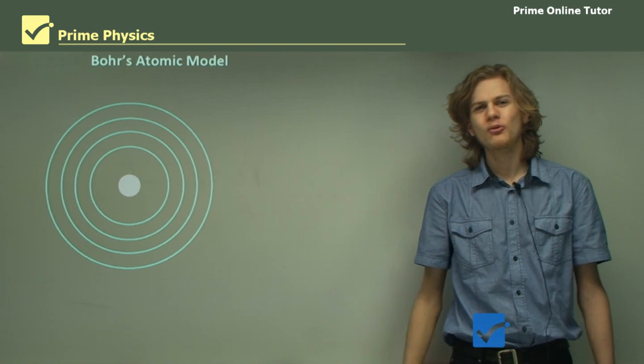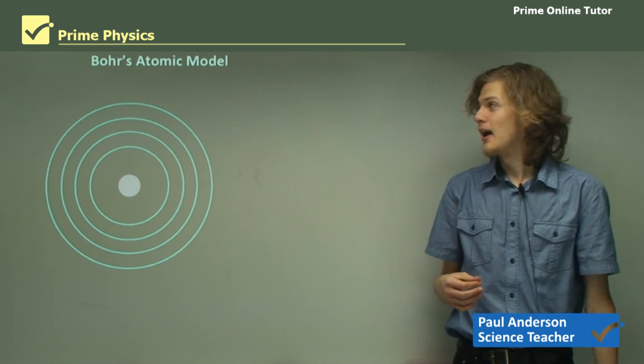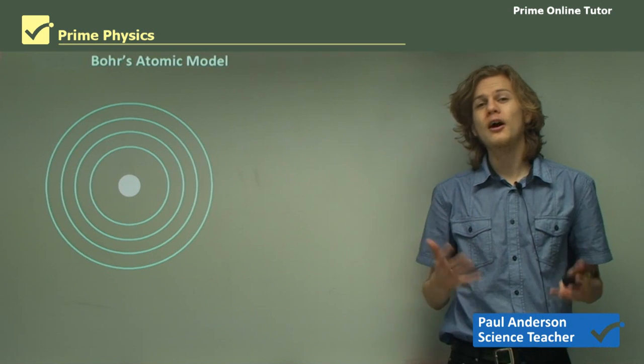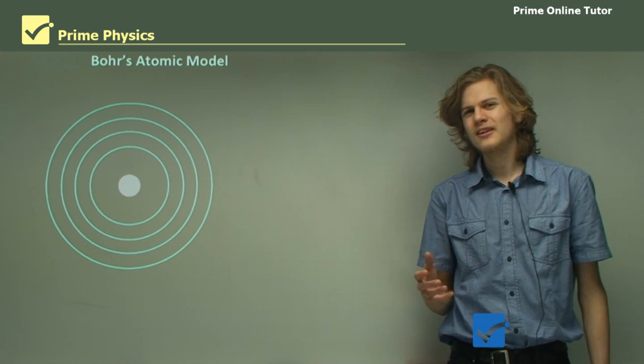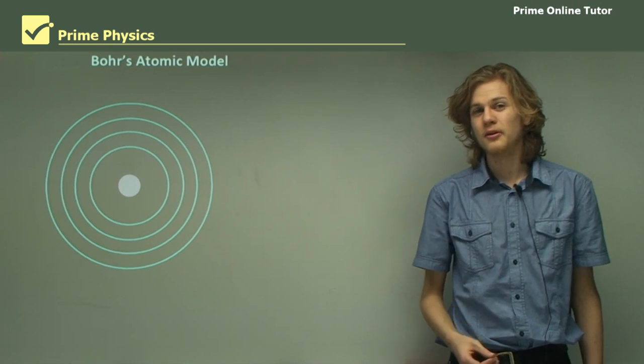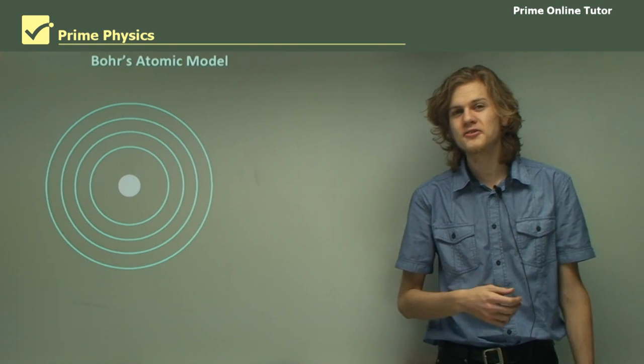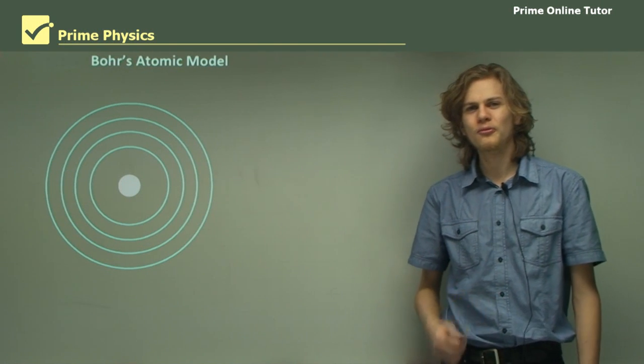Hello, everyone. Today we'll be looking in a little more detail at Bohr's atomic model, which he used to describe the structure of the hydrogen atom. Unfortunately, he couldn't really extend it to bigger atoms, but it was still pretty good. It was the first model to ever use quantum physics. So, without further ado, let's get started.